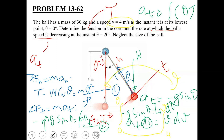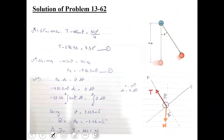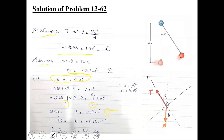To summarize the solution: we applied summation Fn equals m·an (equation 1) and summation Ft equals m·at (equation 2), giving at equals minus g·sinθ. Using at·ds equals v·dv and integrating from theta=0 to theta=20° (v from 4 to v), the value of v comes out to be 3.357 meters per second. The tangential acceleration at is minus 3.36 m/s². Substituting these into equation 1 gives the tension T equal to 361.1 Newtons.